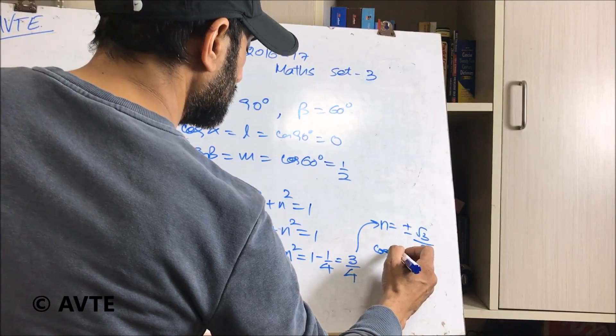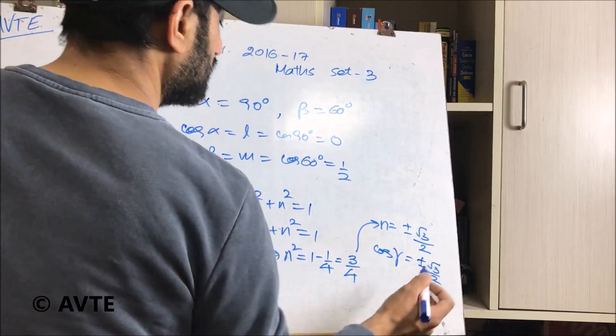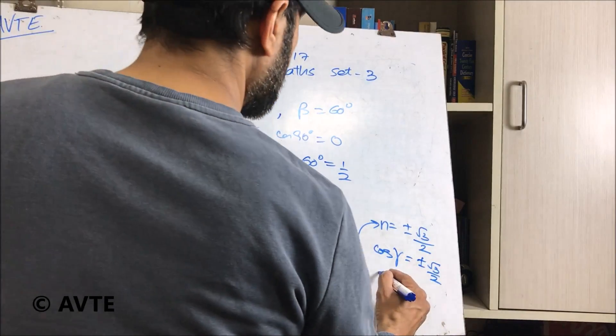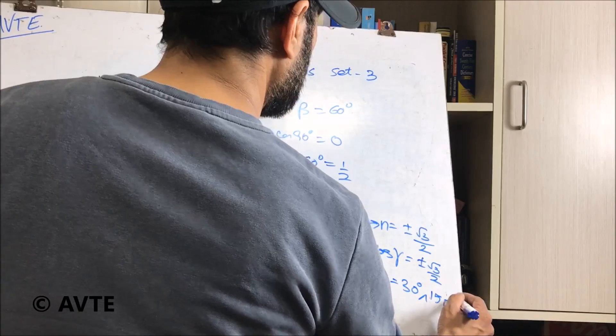That is cos, so gamma is equal to plus minus root 3 by 2. So there are two values. Gamma is equal to 30 degrees and 150 degrees.